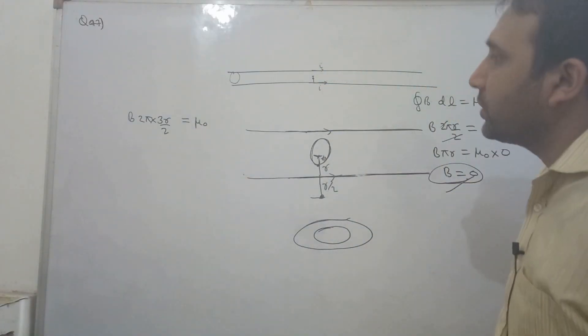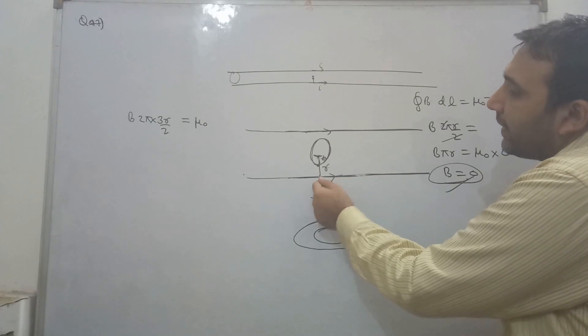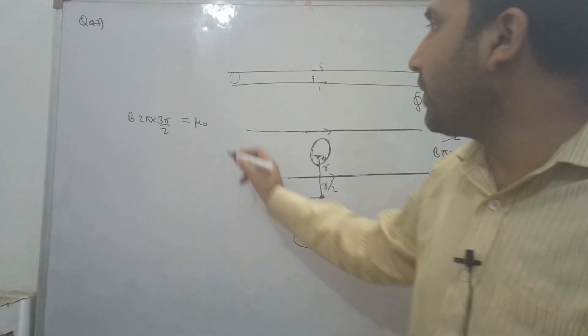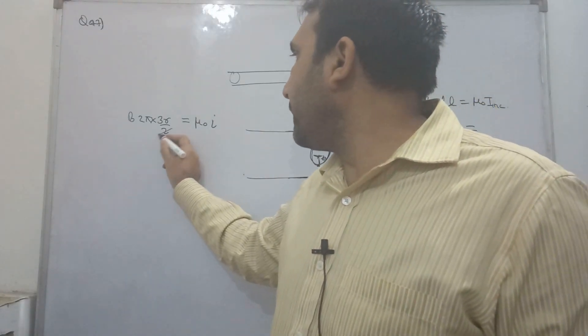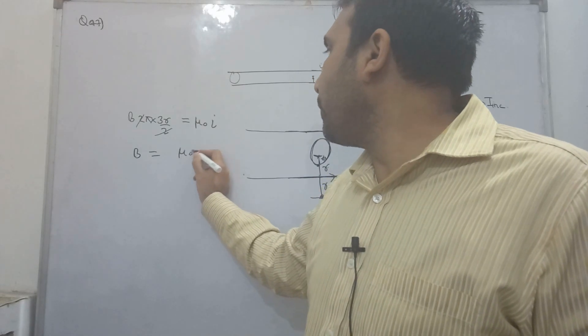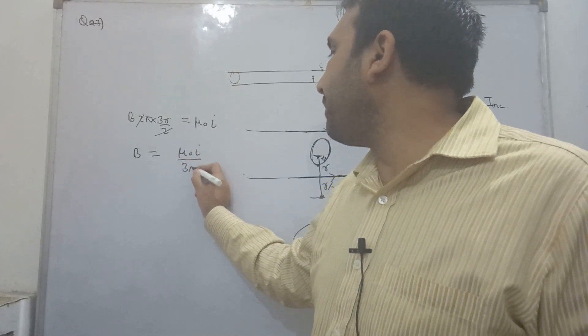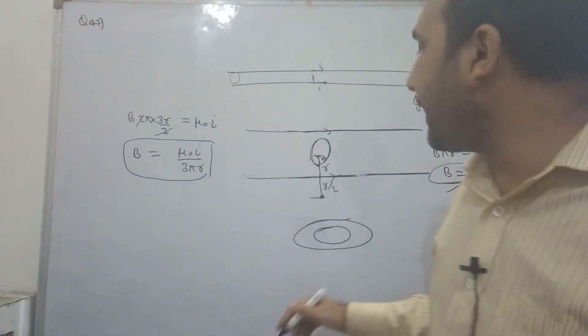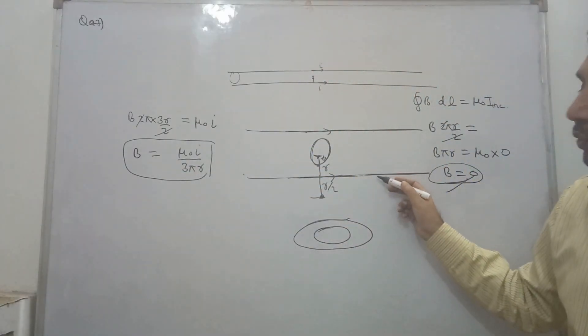This loop contains the current flowing through it, which is i. So b equals mu naught i upon 2 pi r. This is the second part, guys, outside the tube at r by 2 distance. This is question number 47. Now we'll be moving towards question number 48.